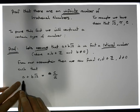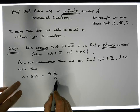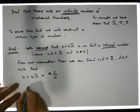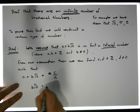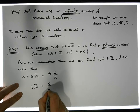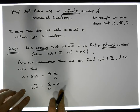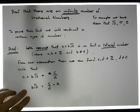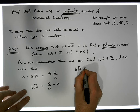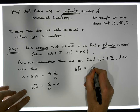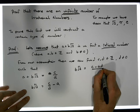So what does this tell us? If a plus b root 2 can be written as a rational number, then we must have b root 2 must be equal to c over d minus a. If we just do some common denominator here, we must have that b root 2 must be equal to c minus ad all over d.